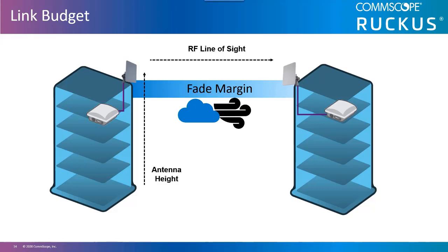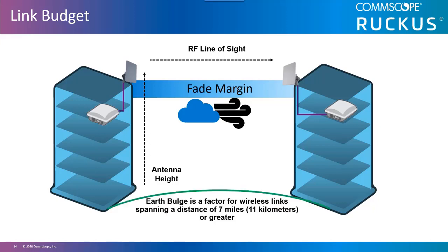Fade margin is an additional signal strength above the required link budget to account for expected but unpredictable signal fading due to environmental conditions. Earth bulge: if the distance of the link is greater than 7 miles or 11 kilometers, you're going to have to take into account the curvature of the earth — not just trees, trucks, and other buildings that could be in the way, but the actual curve of the earth.